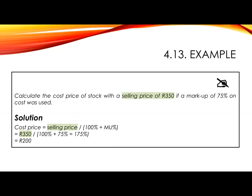Example 4.13: Calculate the cost price of stock with a selling price of R350 if a markup of 75% on cost was used. To calculate the selling price, we would have taken the cost price and added 75% of the cost. So to reverse it, we divide the selling price by (100% + 75%), which is 175%, to get R200. You can check this by taking 200 times 75% and adding it to 200, which confirms R350. Note that the markup of 75% is inserted into the equation to get the 175% used.